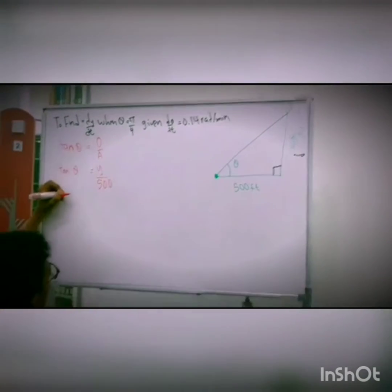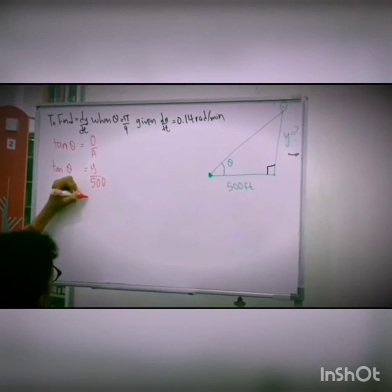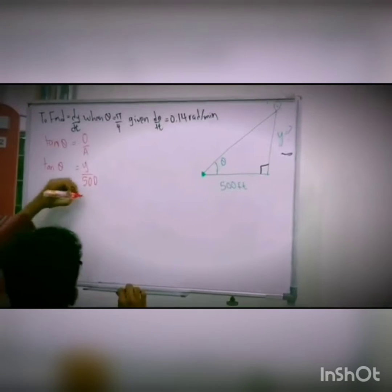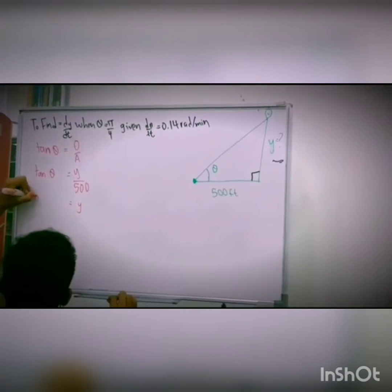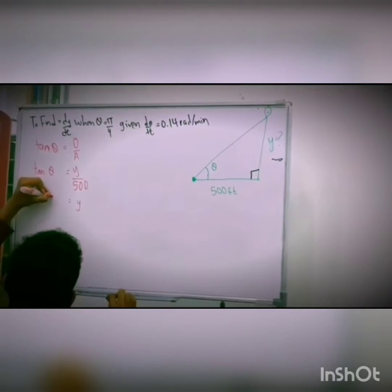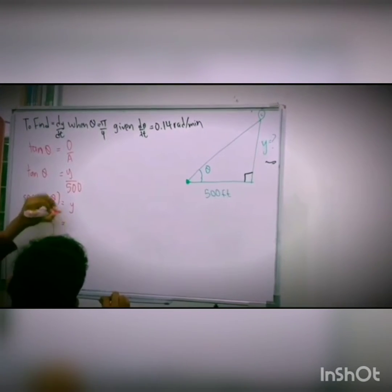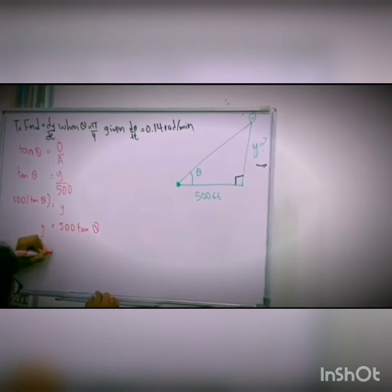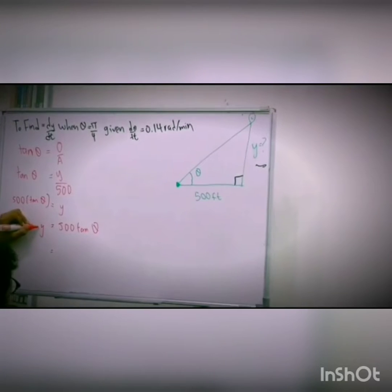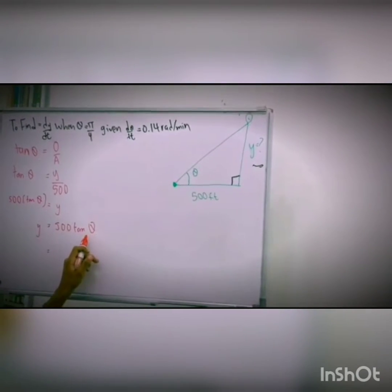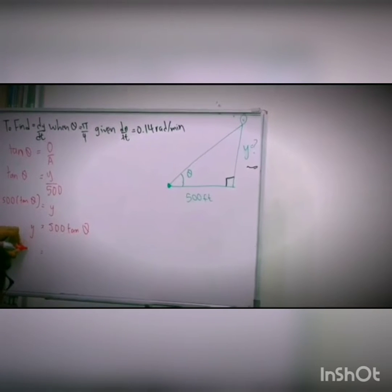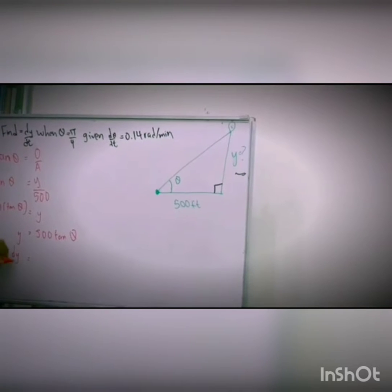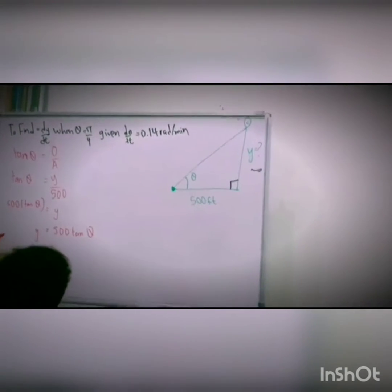Right now, what we want to do is make y as the subject because that's our focus in completing this differentiation. To make y as a subject, we will move all the values to the other side and what we will get is 500 tangent theta. What we want to do now is differentiate y with respect to theta so that we can find dy over dt using parametric differentiation.